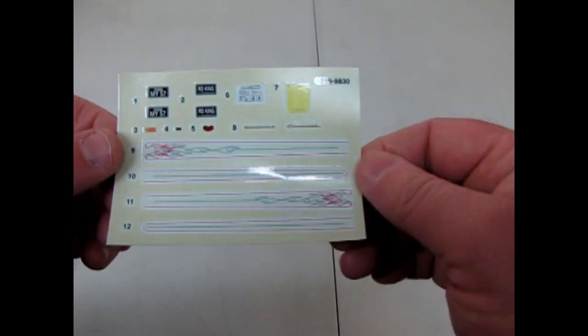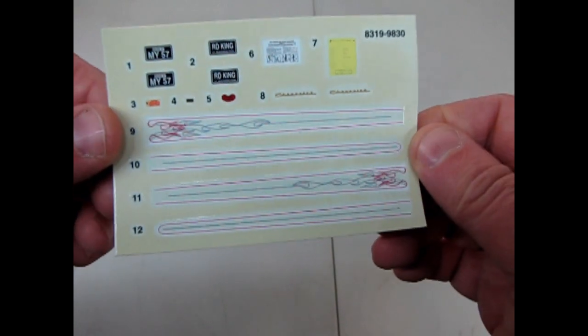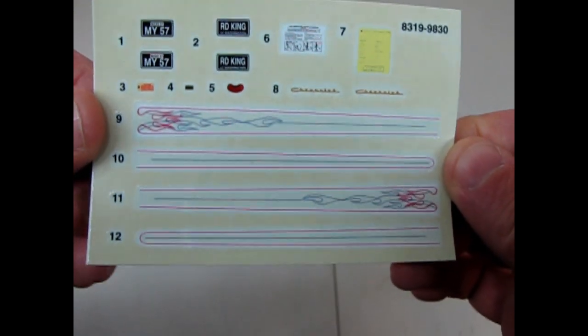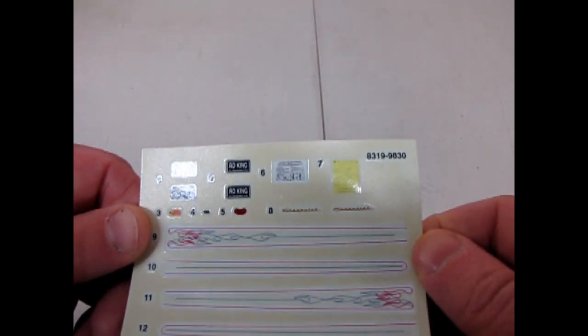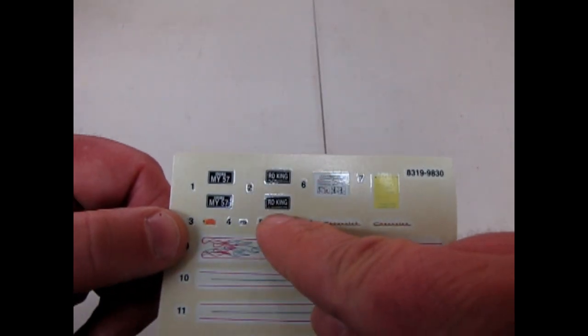Last but not least, this is the decal sheet. This gives you these nice little pin striped flames in these little frames as well as some of the under hood stickers and details that would be common in the 57 Chevy. There's a road king license plate and a plate that says my 57.